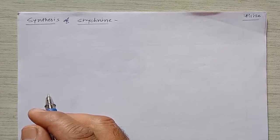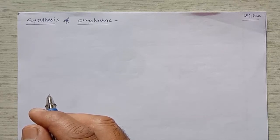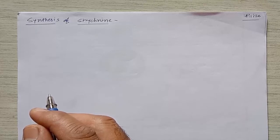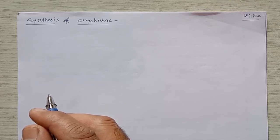Now in this lecture we will discuss the total synthesis of strychnine. In the last lecture, if we go for the retrosynthesis, the final starting materials used will be phenyl hydrazine as well as acetoviratron.